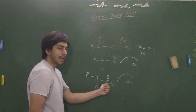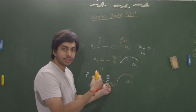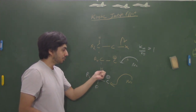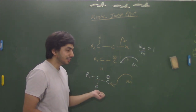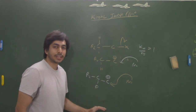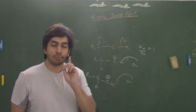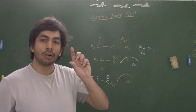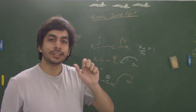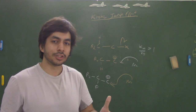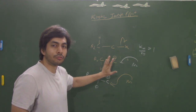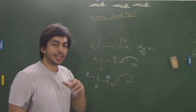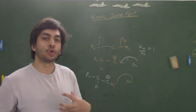This is called the beta secondary kinetic isotopic effect. Why beta? Because this is the alpha carbon at which all the action is happening, and the hydrogen or deuterium is at the beta carbon influencing the rate of the reaction. In primary kinetic isotopic effect, it is directly involved with the breaking or making of the C–H bond. But in secondary kinetic isotopic effect, there is no direct involvement of the C–H bond — there is no breaking of the C–H or C–D bond. That is why it is called secondary kinetic isotopic effect.